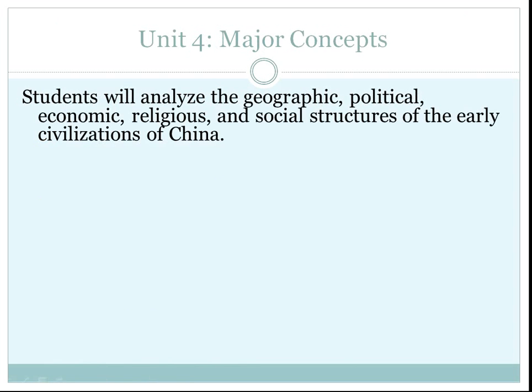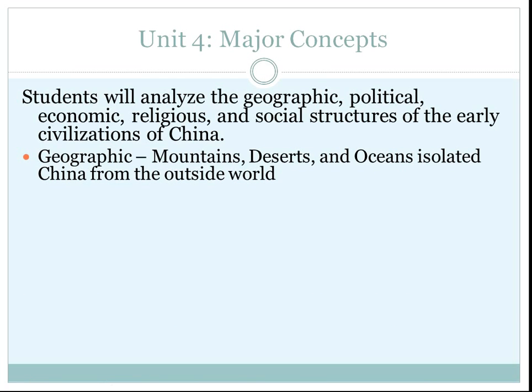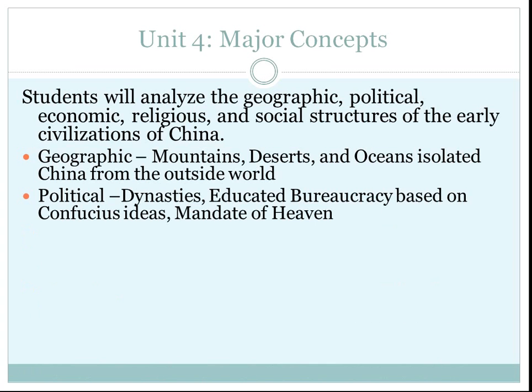We have two more note cards. The first is to analyze the geographic, political, economic, religious, and social structures of the early civilizations in China. In the geographic sense, the Chinese civilizations were isolated from the outside world. They developed a unique culture because of mountains, deserts, and oceans, much like the ancient Indians. In the political realm, they had dynasties, an educated bureaucracy based on Confucius' ideas, and they were governed by the idea of the mandate of heaven.